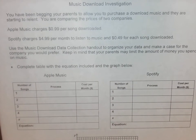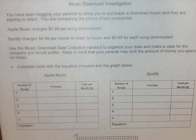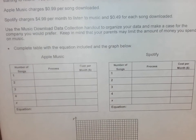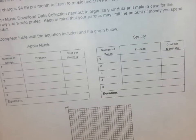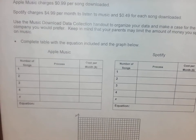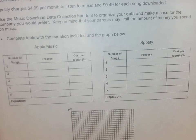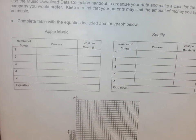You're begging your parents to let you download music and they're starting to relent. They ask you to find some prices. Apple Music charges 99 cents per downloaded song. Spotify charges $4.99 per month to listen to music and 49 cents per song. Use the handout to organize your data and make a case for which company you would prefer. Keep in mind that your parents may limit the amount of money you spend on music.